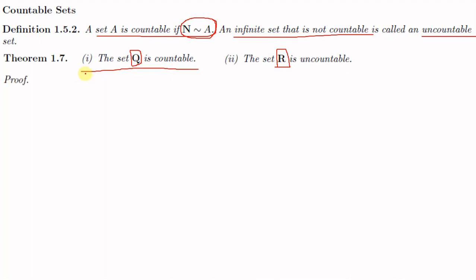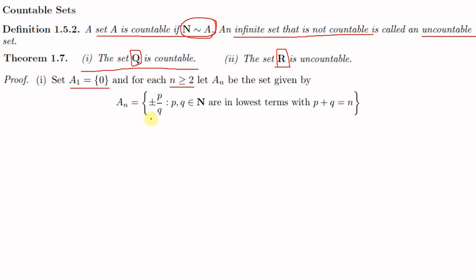We start by defining the sets: A₁ is equal to the singleton set {0}, and for each n greater than or equal to 2, Aₙ is defined as the set of all ±p/q where p, q are natural numbers in lowest terms with p + q = n. Here p and q are in lowest terms, meaning they share no common factor other than 1.